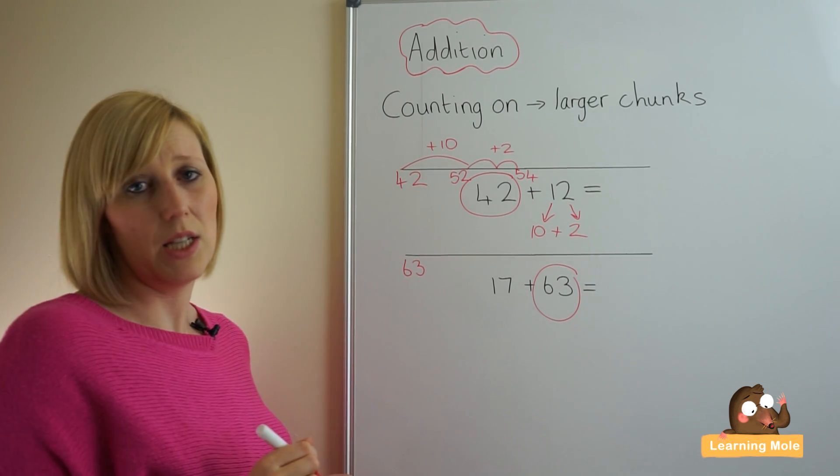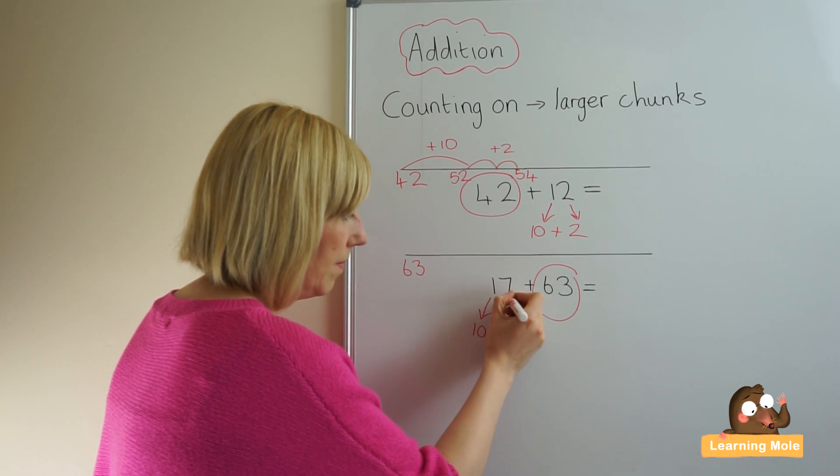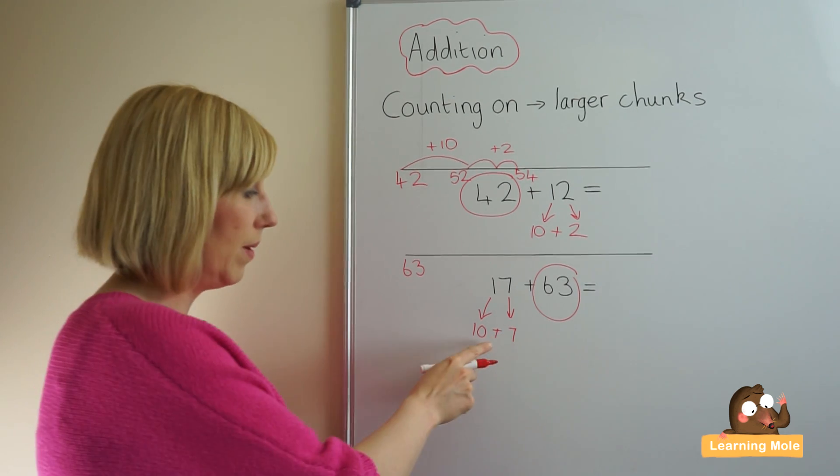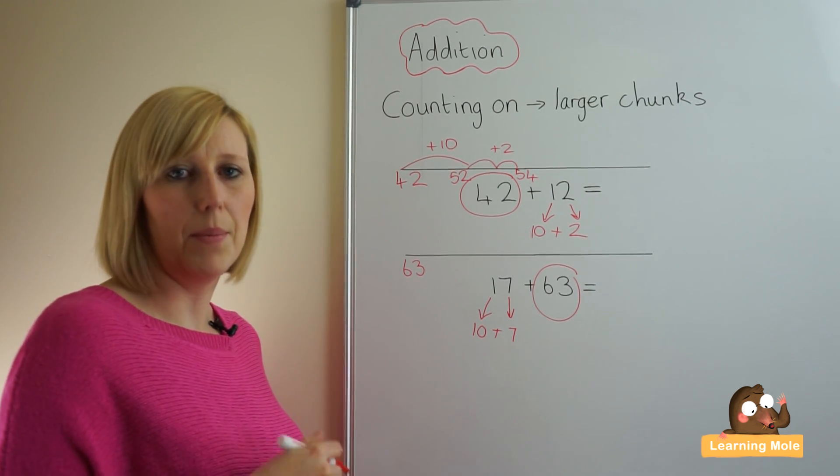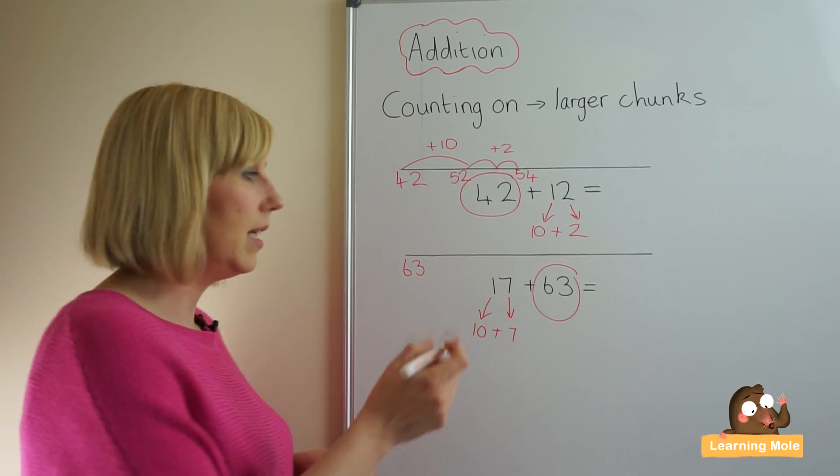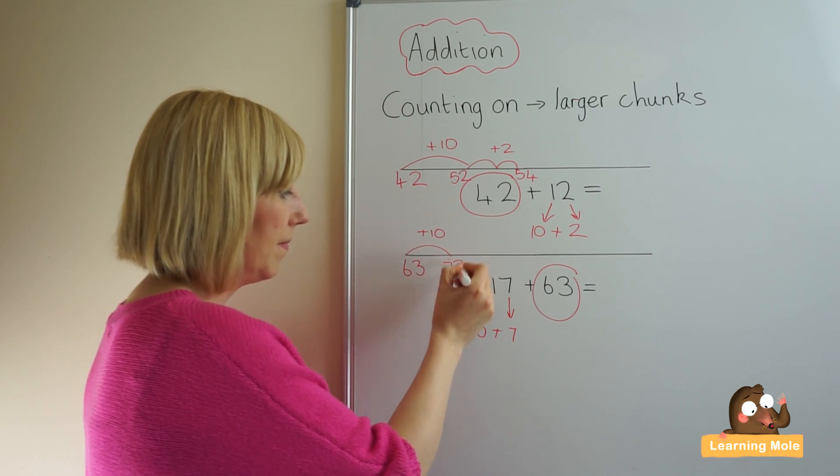We partition our second number into tens and units. We then add our chunks, so we've got a chunk of ten. Again, remember at this stage your child should be comfortable in adding ten to any number, and then we add our units.